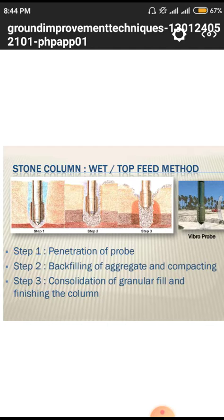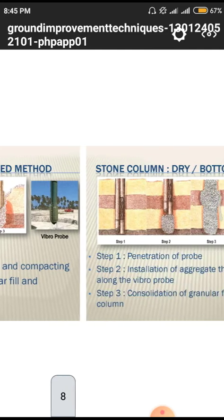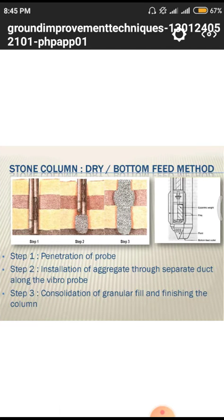After digging the bore, we fill layer by layer. After each layer we apply vibrations — vibration eliminates voids; otherwise water occupies the void space and the soil is damaged. Step one: penetrate the probe. Step two: backfill aggregate — the probe vibrates and the aggregate settles. Next is consolidation of granular fill and finishing of the column. For the dry bottom-feed method, step one is penetrating the probe, step two is installation of aggregate through a separated duct along the vibro probe.